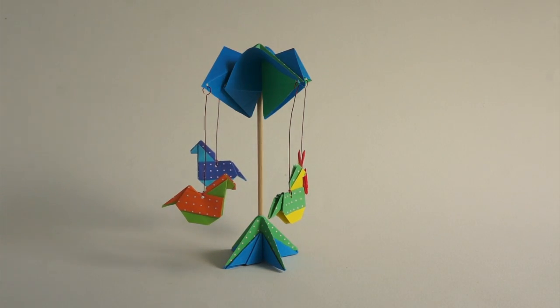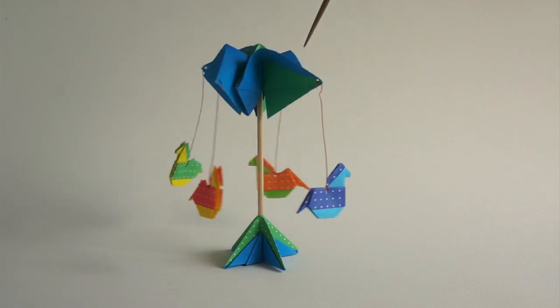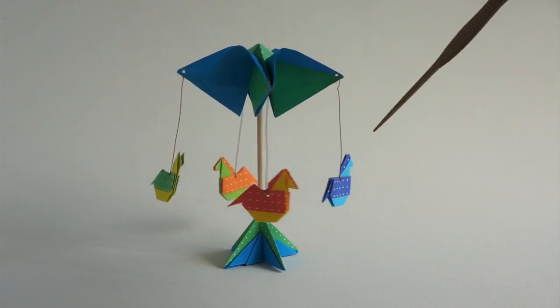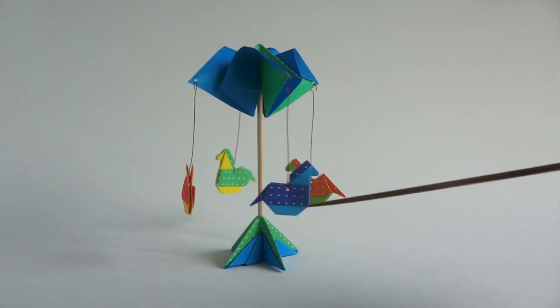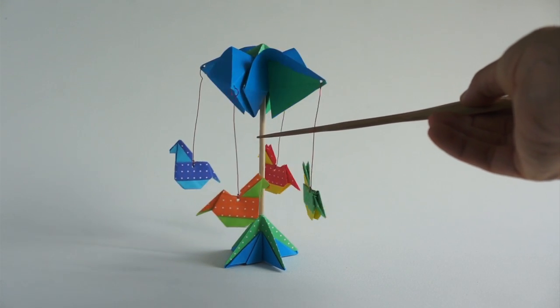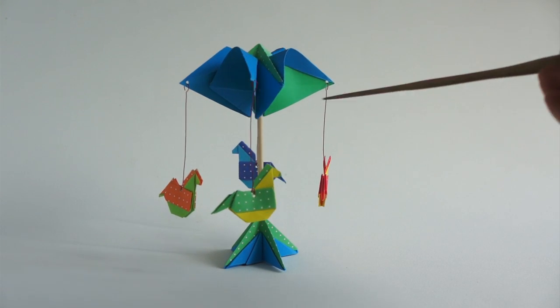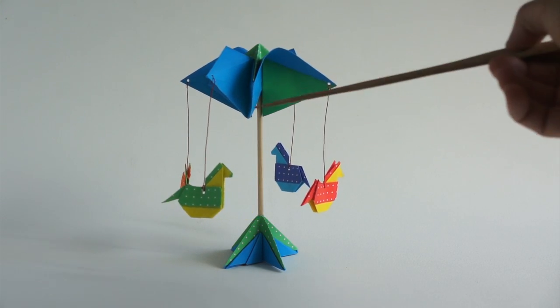To make the carousel, we need a spinning top, we need four horses, we need a base, we need a skewer, and we need four pieces of wire.